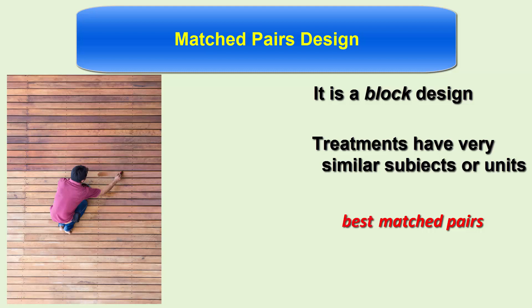we can use the best form of a matched pairs design. Suppose we have 16 decks available to test the stain. We can pair two halves of the same deck and then randomly select one half to get one stain and the other half to get the other stain.